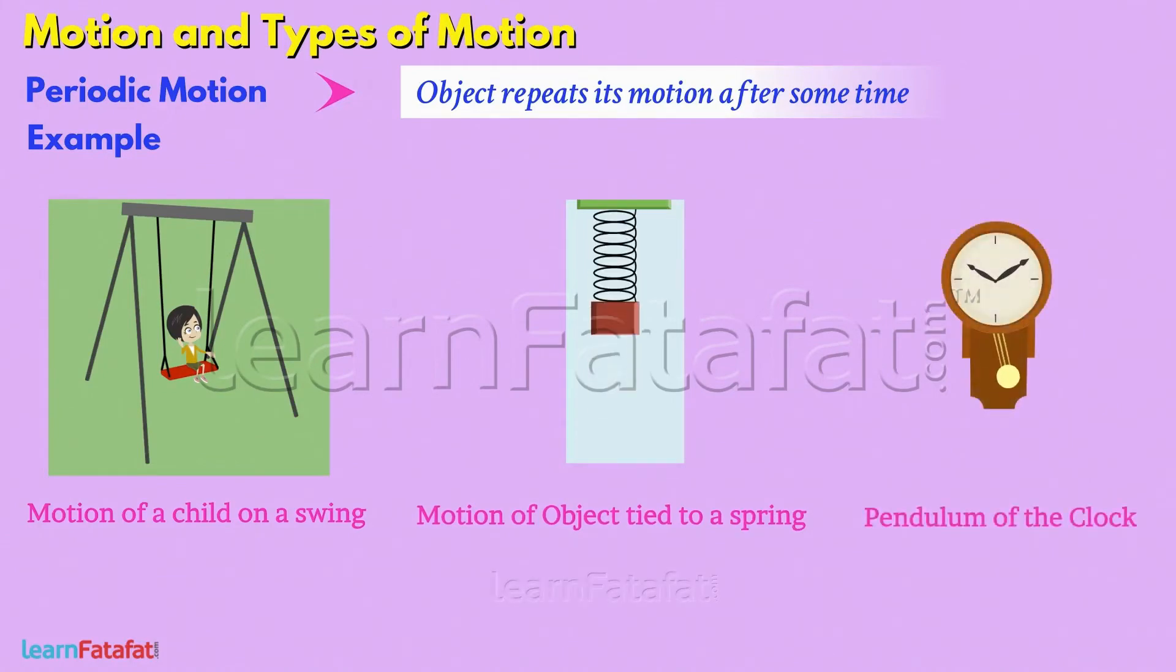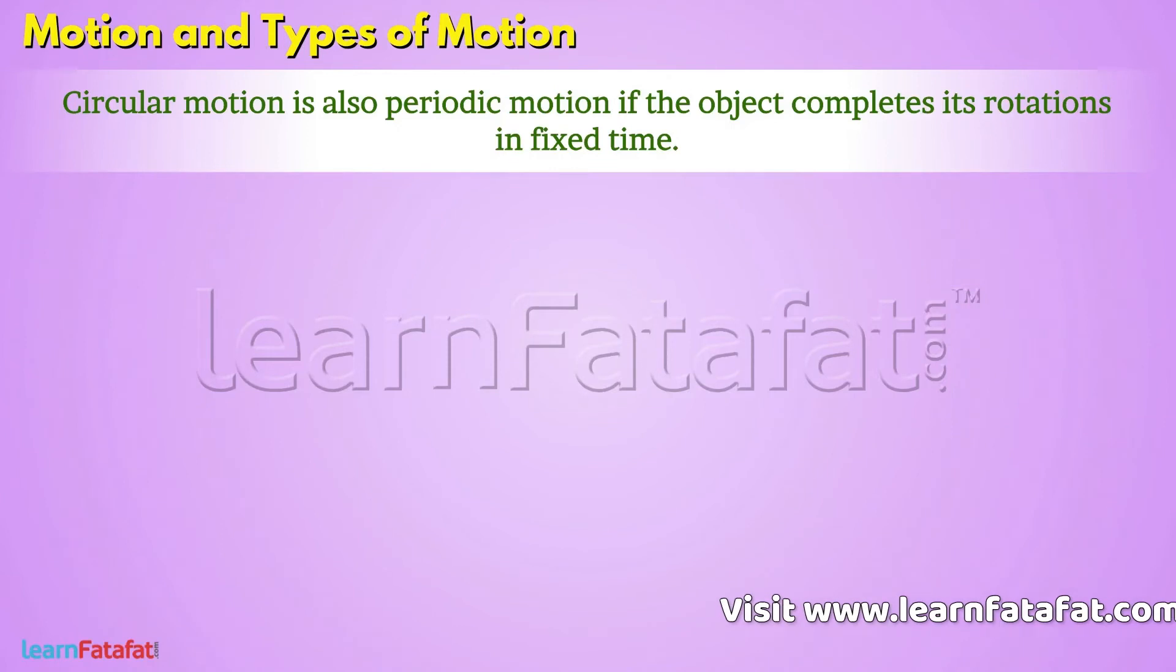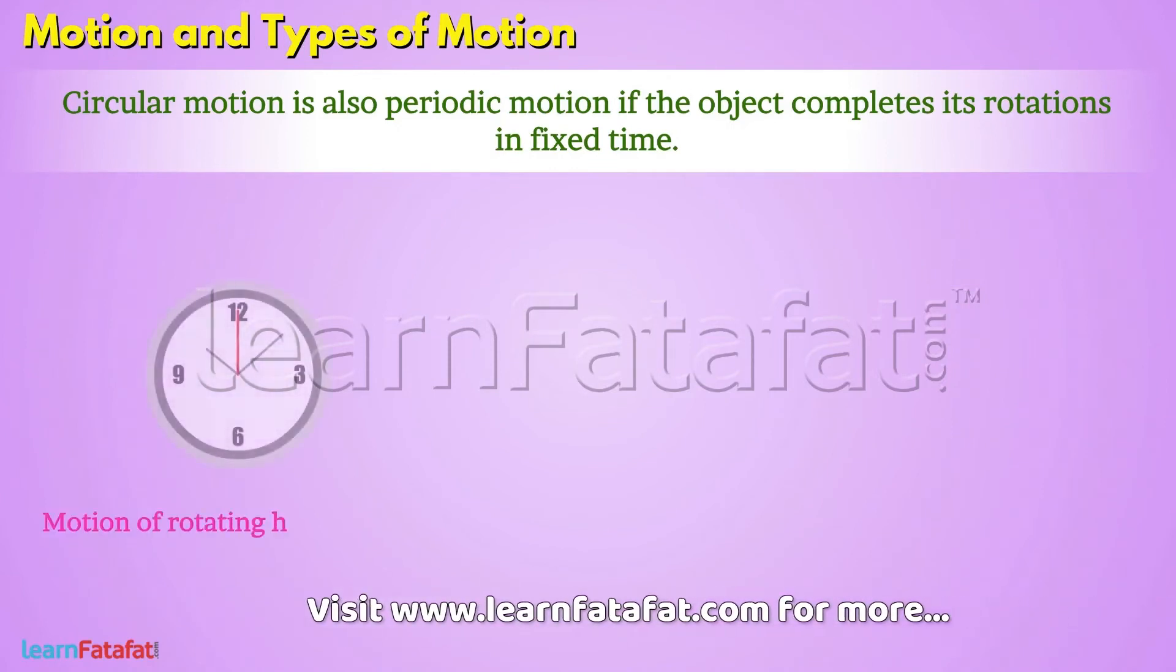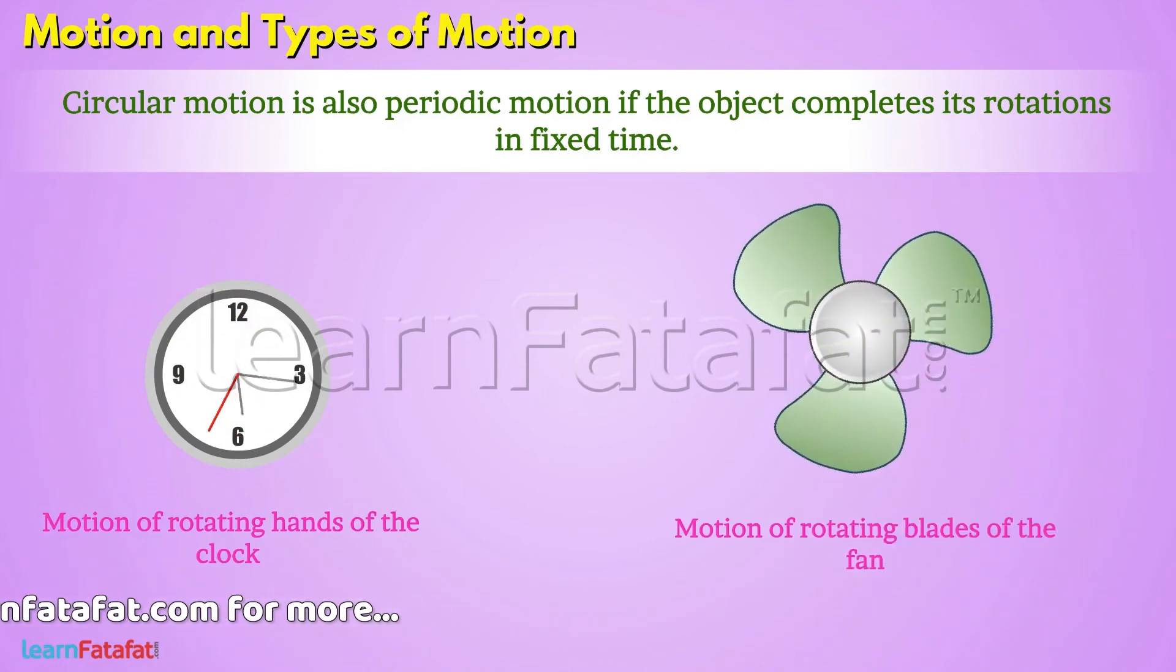Pendulum of the clock. Circular motion is also periodic motion if the object completes its rotation in fixed time. For example, motion of rotating hands of a clock, motion of rotating blades of a fan, etc.